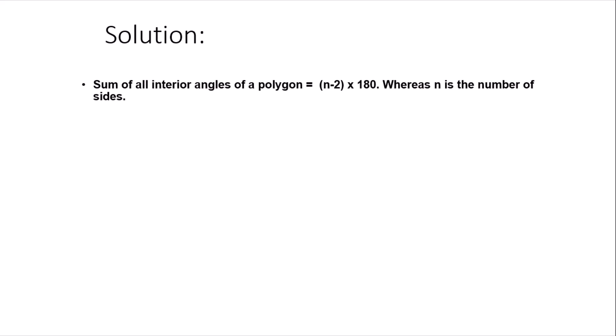First we need to know what is the sum of all angles of a pentagon. Here is the formula: sum of all interior angles of a polygon equals (n-2) × 180, whereas n is the number of sides. You can either memorize this formula or you can learn it with reference to the triangle formula. We know that in a triangle the sum of all angles is 180 and a triangle has three sides, so n equals 3-2 multiplied by 180.